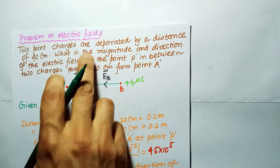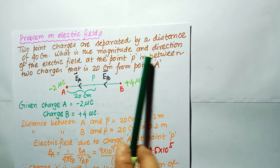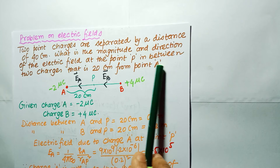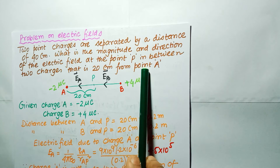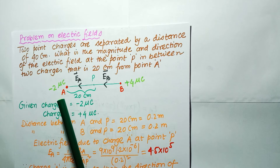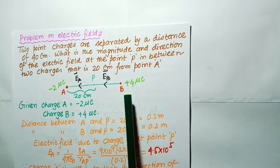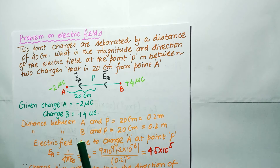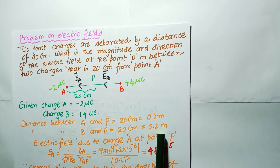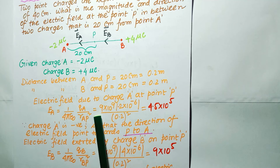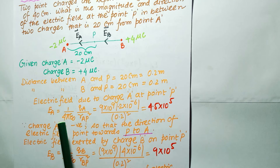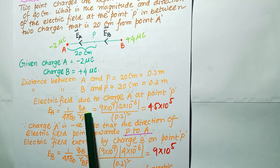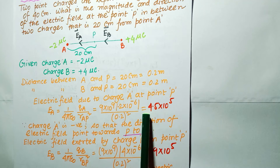Our next problem involves electric fields. Two point charges are separated by a distance of 40 cm. What is the magnitude and direction of the electric field at point P, which is midway between the two charges at 20 cm from point A? At point A we have −2 microcoulomb, and at point B we have +4 microcoulomb. Distance AP = distance BP = 20 cm = 0.2 m. The electric field Ea due to charge A at point P equals (1/4πε₀)·Qa/Rap² = 4.5×10⁵ N/C.